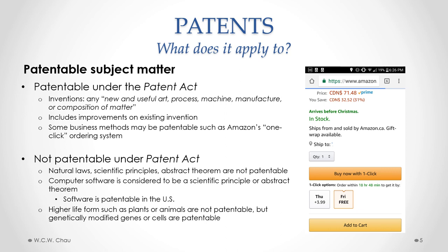In contrast, in the U.S., software is patentable. What is also not patentable is any kind of higher life form, such as plants or animals. However, on a more microscopic level, the genetically modified genes or cells that may make up a plant or animal — those genes or cells are capable of being patented.